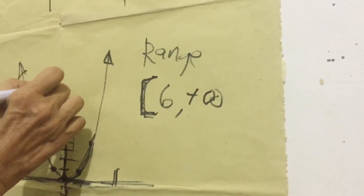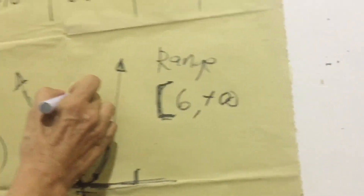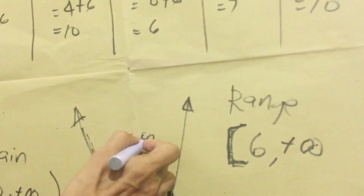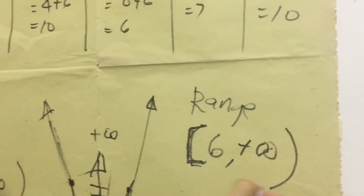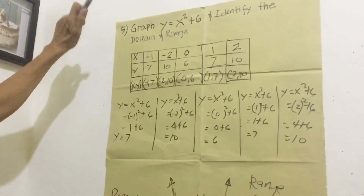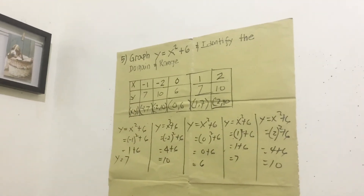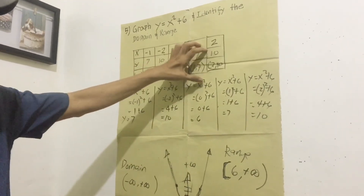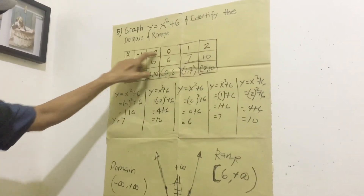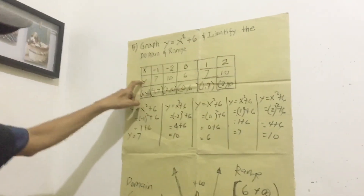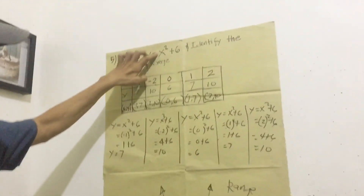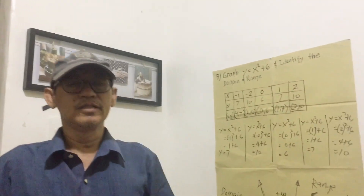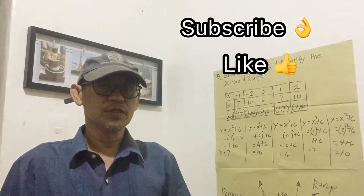The range is [6, positive infinity) because 6 is included and y continues upward without bound. Therefore we have found both the domain and the range of y = x² + 6. Before graphing, we always need to make a table of values — x can be any number, and y is computed from the given equation. I hope you understand; don't forget to subscribe, like, and share.